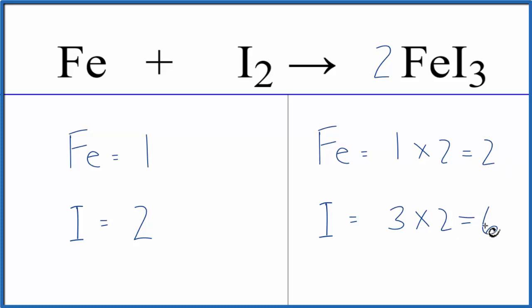This is nice, though, because now that this is 6, I can see a coefficient of 3. 2 times 3, that'll give me 6. And now the iodine atoms, those are balanced.